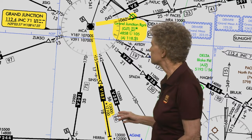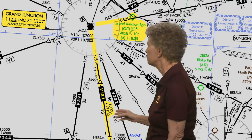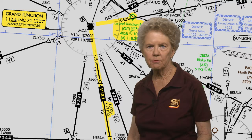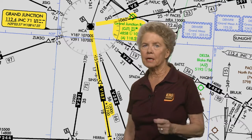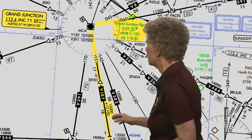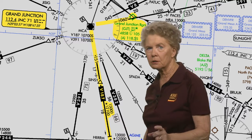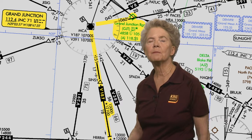15,000 feet is really going to be pushing it for a lot of general aviation aircraft. That's a good reason for taking a close look at the IFR chart before you start out on a trip and making sure that the MEA on the airway, particularly if it's in a mountainous area, is not going to be above the capability of your aircraft.